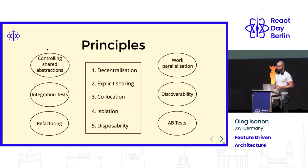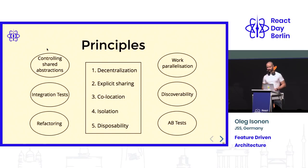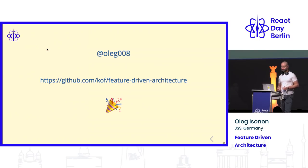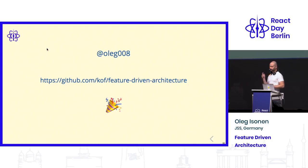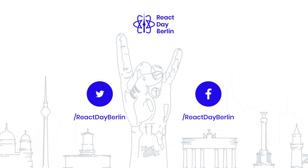These six goals led me to five principles that I discovered for myself, though they are probably described in all the smart books about architecture like SOLID: decentralization, explicit sharing, collocation, isolation, and disposability. I've created a repository with a Redux example that implements this architecture — you can run it, try it online, and I'd like to start a discussion in the issues about how we can make it a more formal specification. If you're interested, hit me up. Thanks for having me.